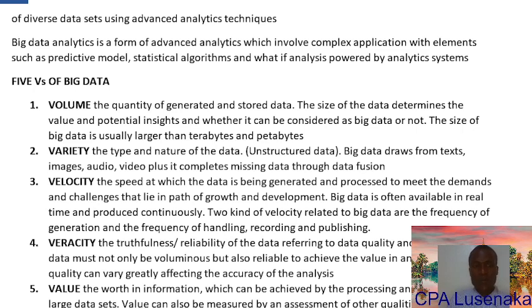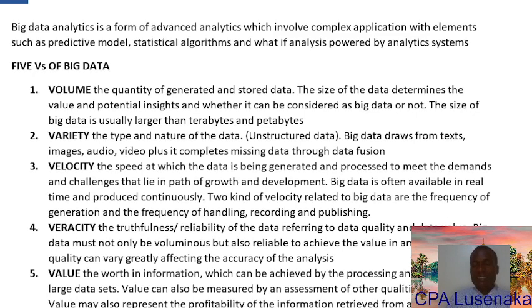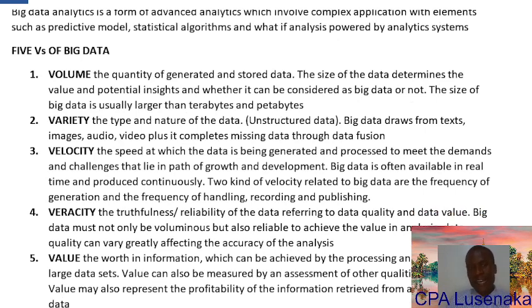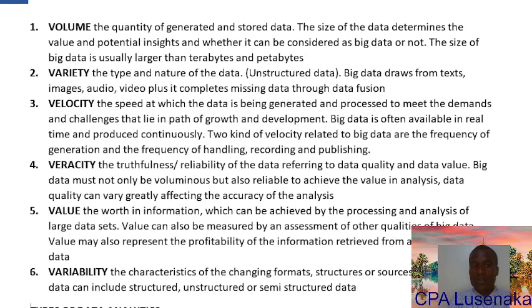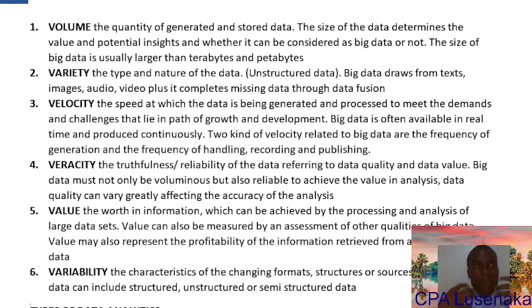The fifth V is Value — this refers to the benefits of analyzing this large data. Are we getting something useful from this analysis, or are we just analyzing for the sake of it? The sixth V is Variability — this refers to the changing characteristics such as format, structures, and sources. Big data includes structured, semi-structured, and unstructured data coming from different sources in different formats and structures.